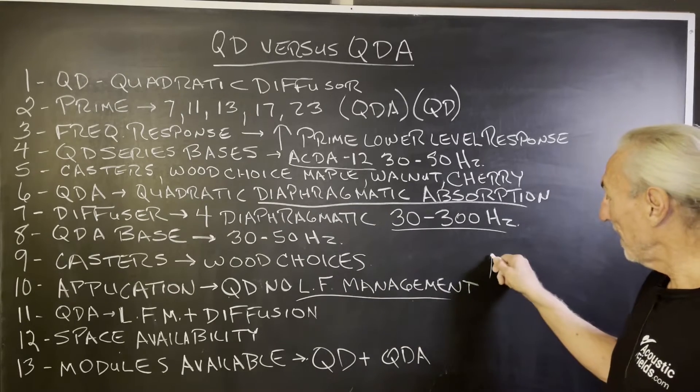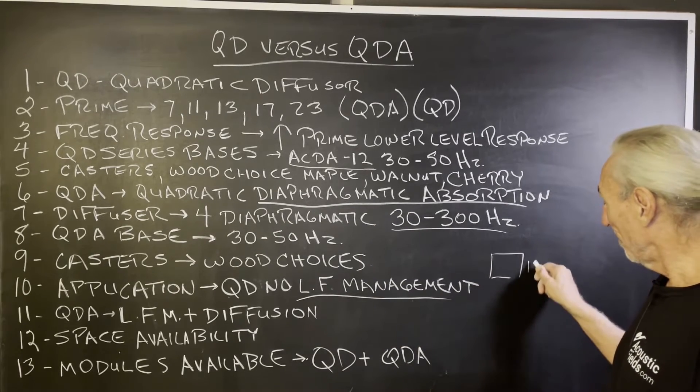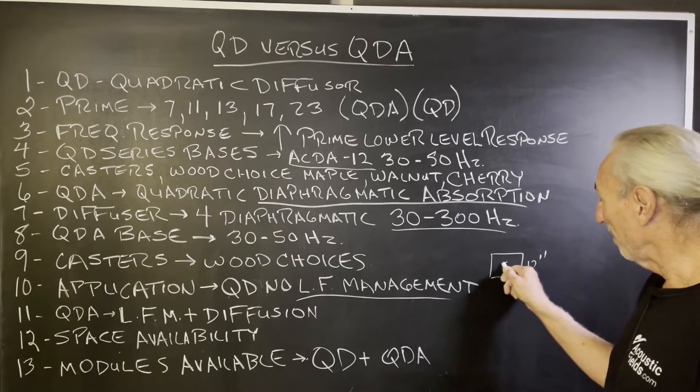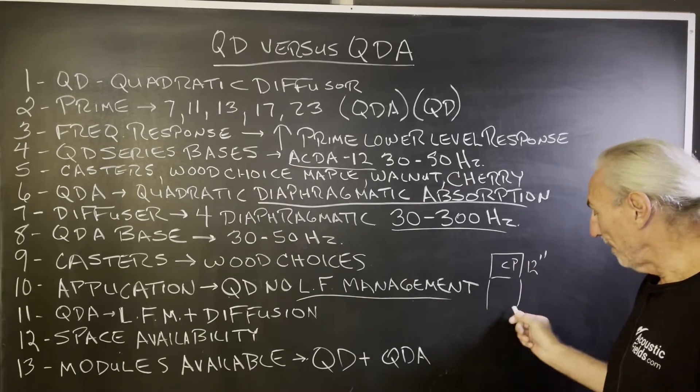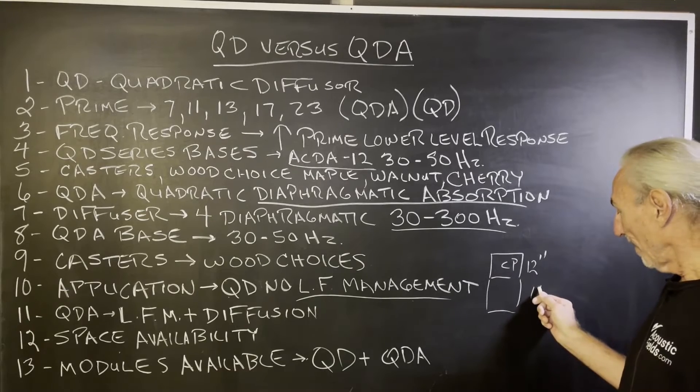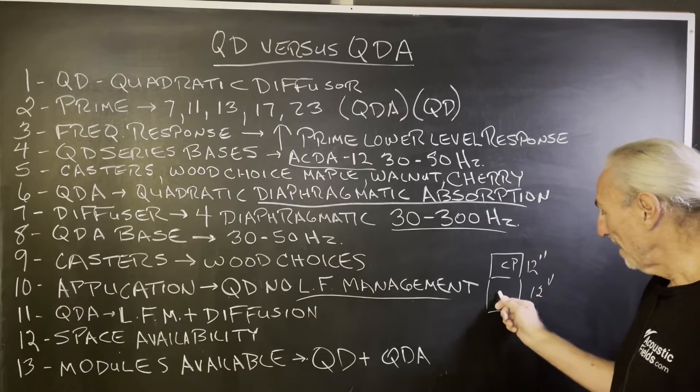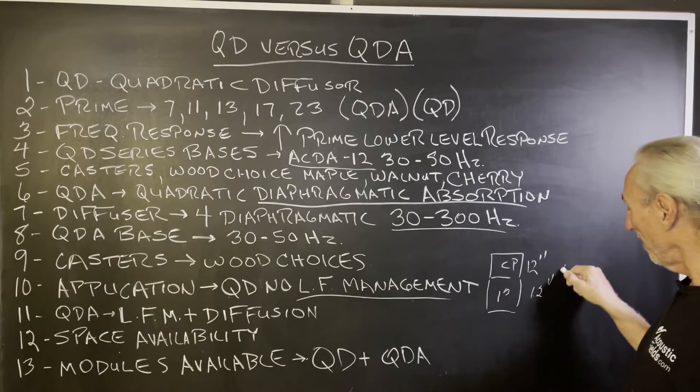Because if you took our ACDA10 unit or carbon panel, which is 12 inches, and then you add a diffuser in front of it, let's say a 13, that's 12. I mean, you're 24 inches.